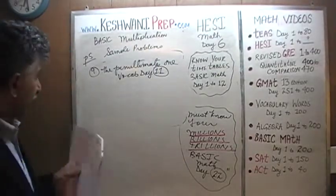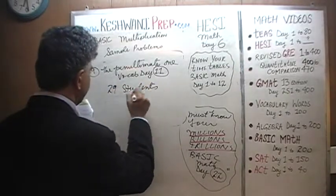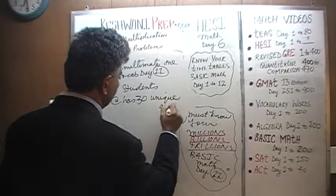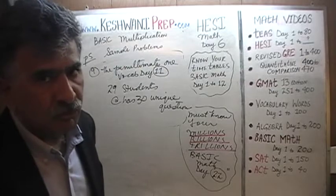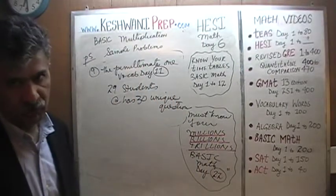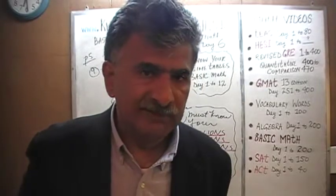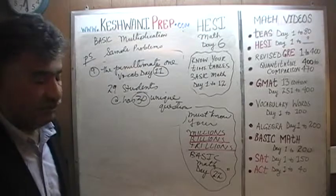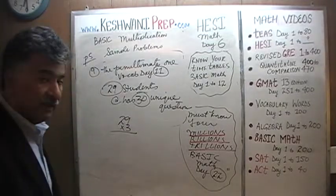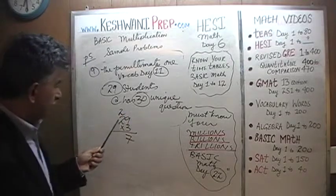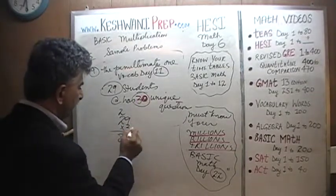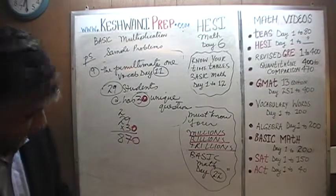In number 9 we have 29 students, and each has 30 unique questions — the students do not have the same questions; everyone has a unique set of 30. The question is: how many questions does the teacher have to make up in total? Very simple — just multiply 29 by 3, then stick a 0 at the end. 9 times 3 is 27, carry 2. 3 times 2 is 6, plus 2 is 8. Take care of the 0 — the answer is 870.